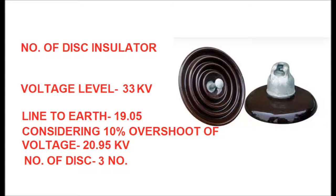For the 33 kV voltage level, the line-to-line voltage is 33 kV and the line-to-earth voltage is 33 divided by √3, which equals 19.05 kV. Considering a 10% overvoltage, that comes to 19.05 × 1.1 = 20.95 kV. Dividing 20.95 by 11 gives approximately 2. For safety, one additional disc is added, giving 3 discs for suspension type and 4 discs for tension type string in a 33 kV system.